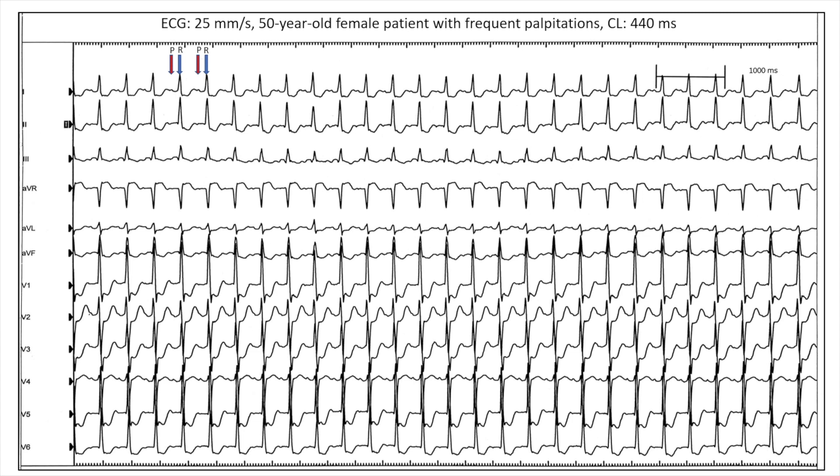We have a cycle length of 440 milliseconds. We see a one-to-one correlation between P and QRS, and we have a long RP, short PR tachycardia.